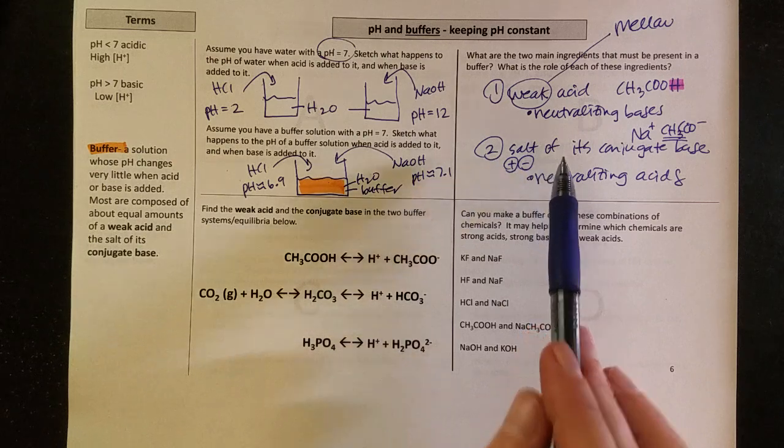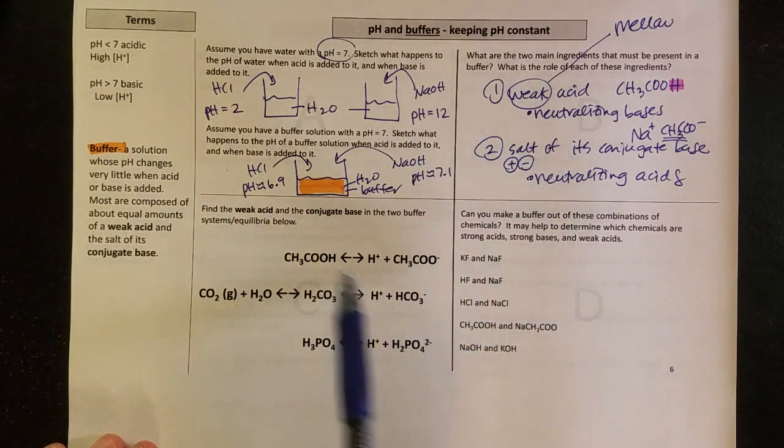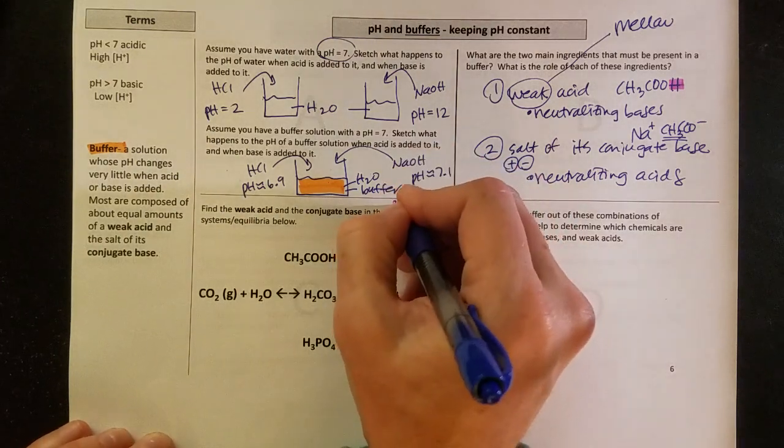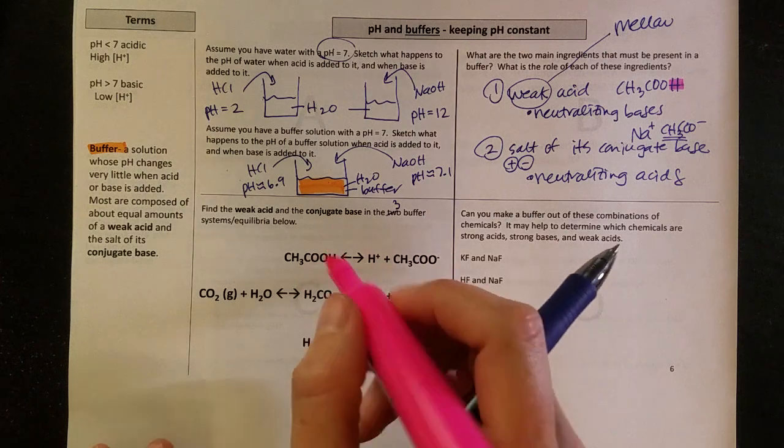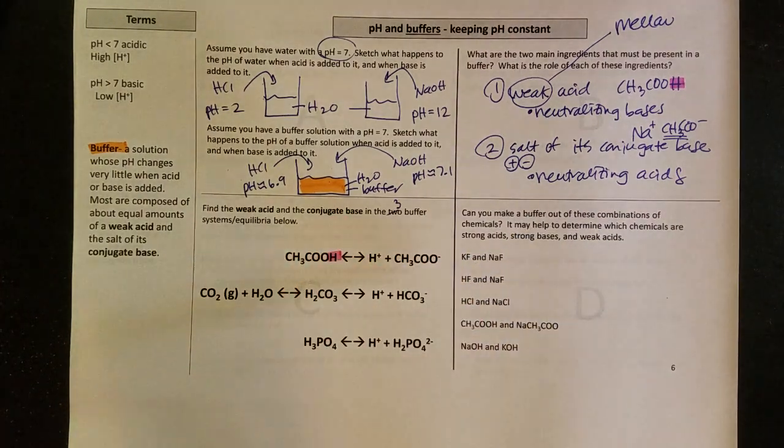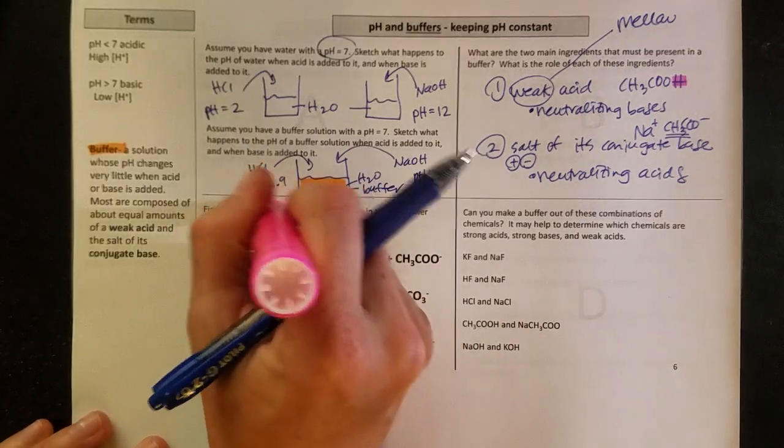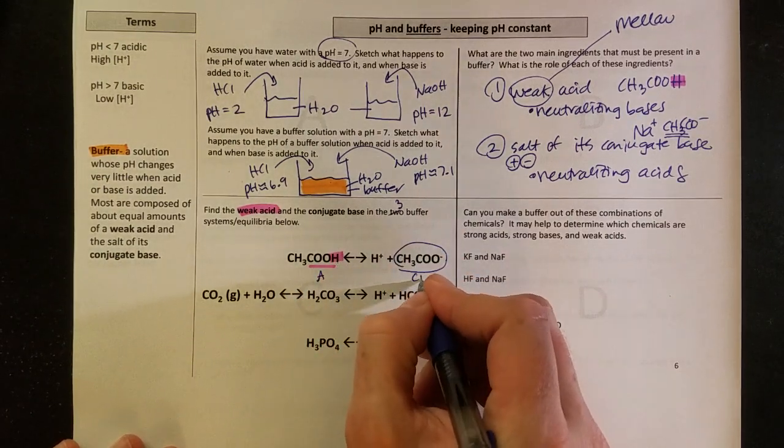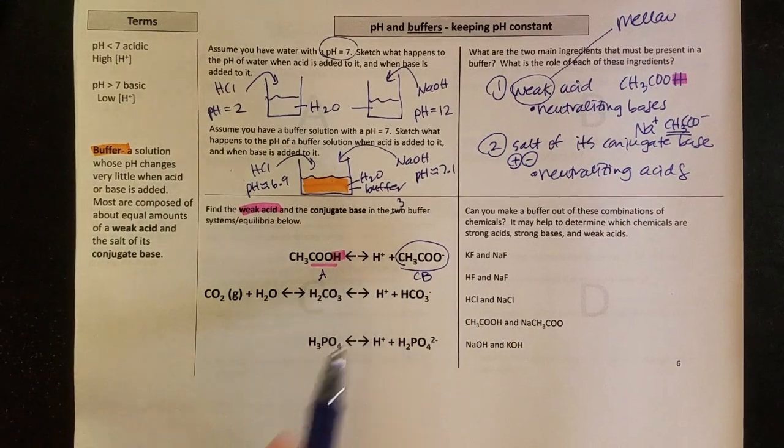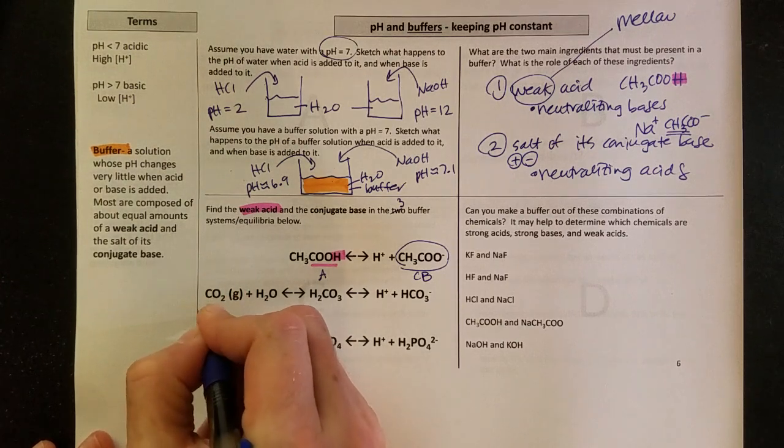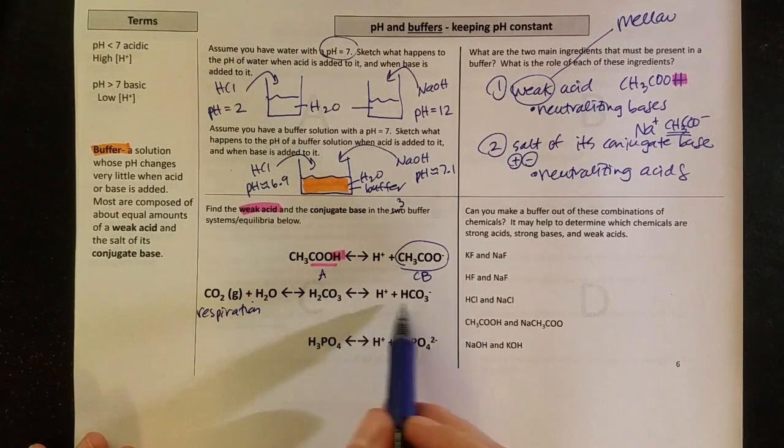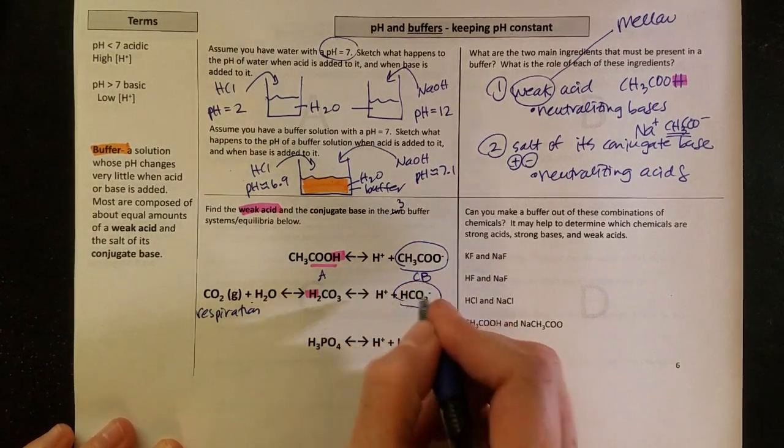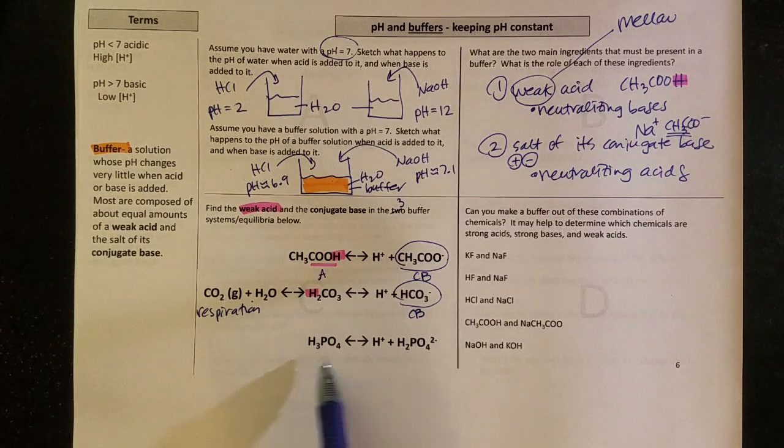So with those two ingredients in our buffer, let's see if we can identify them in a couple of different places. So here are some equilibria. I ask you to find the weak acid and the conjugate base in the, we actually have three different buffer systems here. So the acids, one of the ways we can spot those is the COOH, the carboxylic acid. So that would be my acid. And then the conjugate base is going to be just like that, but with the proton gone. So this would be my conjugate base. Down here, we're going to ignore the CO2, this just ties it into respiration, and focus on this half of the reaction. So here is my acid, and then here is the chemical that looks just like it but without a proton. So that would be my conjugate base. I'll leave this one for you to figure out.